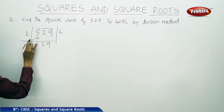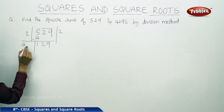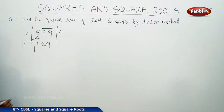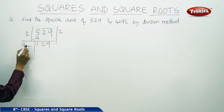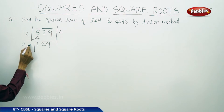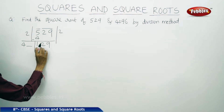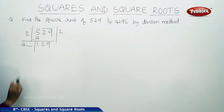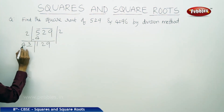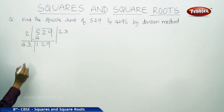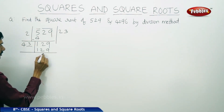Bring down 29 and then double 2 here, it becomes 4. Use a blank here — this blank should be filled by a number. The same number should be written in the quotient, and we should multiply the number obtained to get the product less than or equal to 129. So what should be taken in the blank? If you take 3, then multiply 43 by 3: 3 threes are 9, 3 fours are 12. So the remainder is 0.